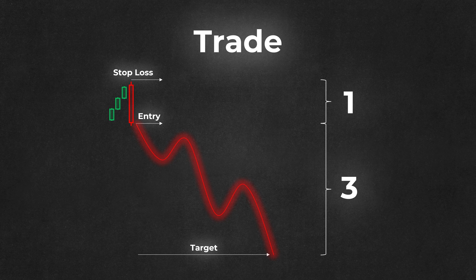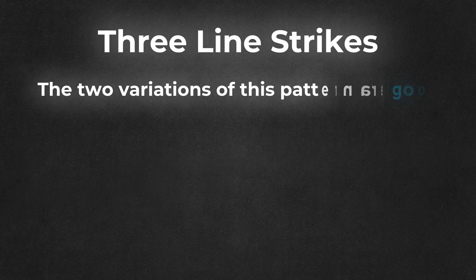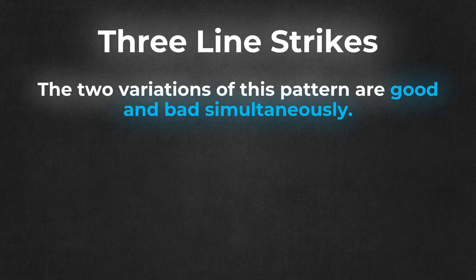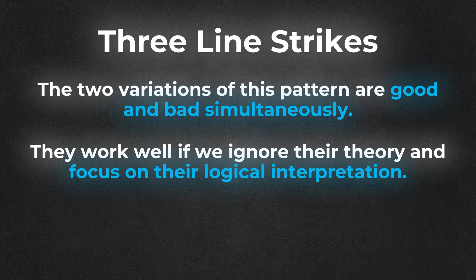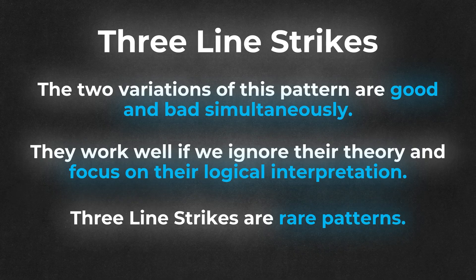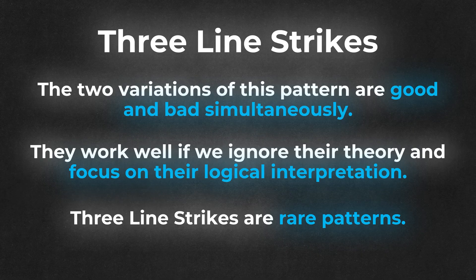The two variations of the three-line strike pattern are good and bad simultaneously. They work well if we ignore their theory and look at their interpretations logically. However, they are extremely rare patterns. That makes sense because the best opportunities tend to be less frequent than the bad ones. Another point of confusion is that the bearish three-line strike actually signals a long trade and the bullish three-line strike signals a short trade when we look at the way these patterns work in practice — the practice diverges from the theory.